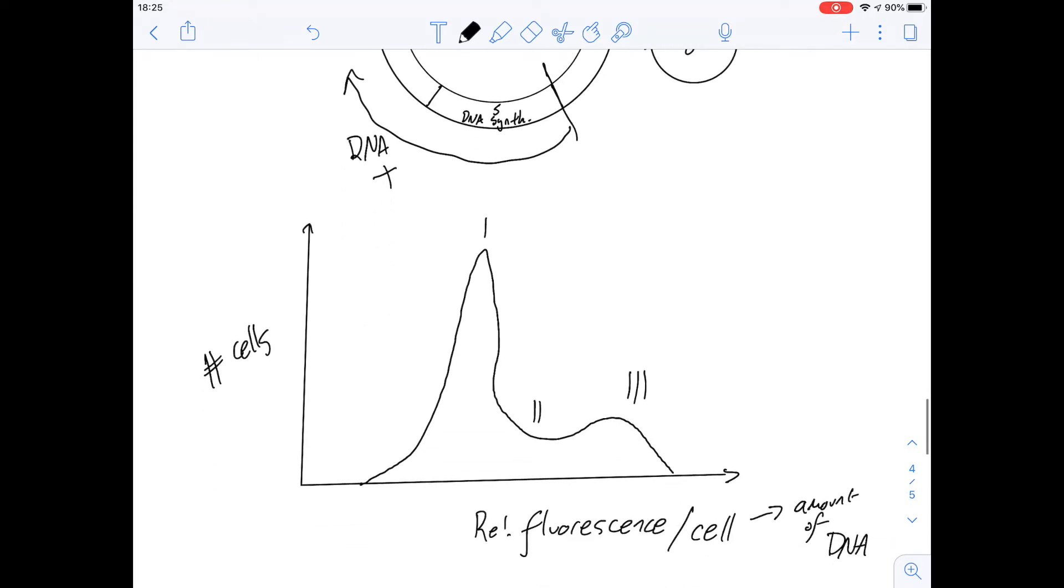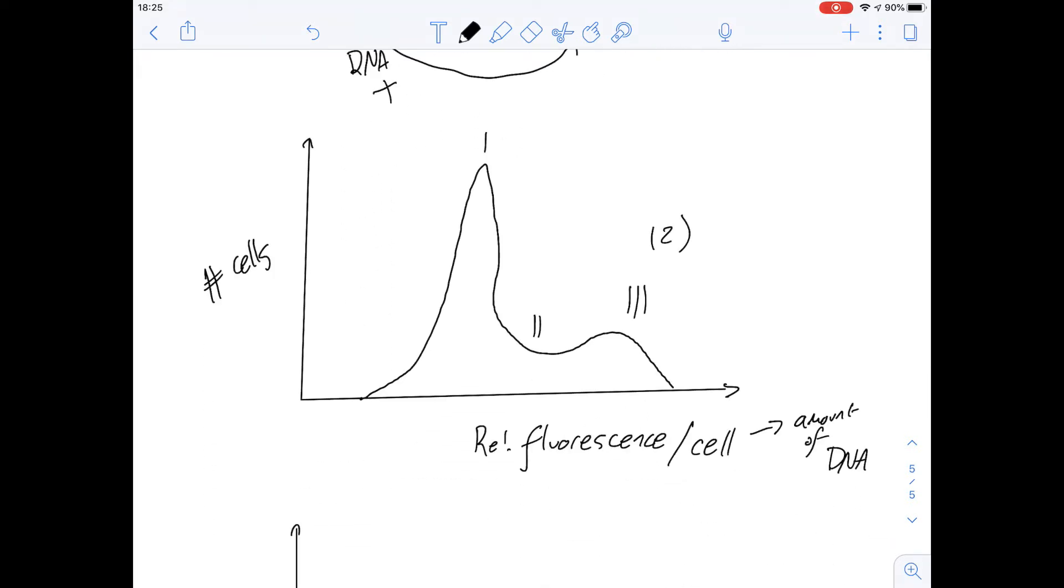So that gives us an answer for number 12 because it tells us immediately that most of the cells must be in G1 so that gives us an answer of A but to rule out the others let's go through them. It tells us that cells spend a very long time in the S phase and I don't see how this graph could really tell you very much about time. I think you'd pick this answer if you misunderstood that the y-axis is looking at the number of cells as opposed to the amount of DNA but because it's showing that most of the cells have less DNA than an exceptional few, it shows that most of the cells in the sample are in G1. What about C?